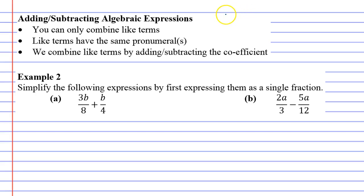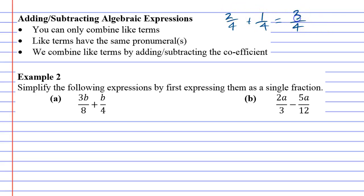In some ways it's easy, in some ways it's difficult. For instance, if I have the fractions 2 over 4 plus 1 over 4, adding them involves keeping the denominator the same — so the 4's stay the same — and adding the numerators: 2 plus 1 is 3. So 2 over 4 plus 1 over 4 is 3 quarters.